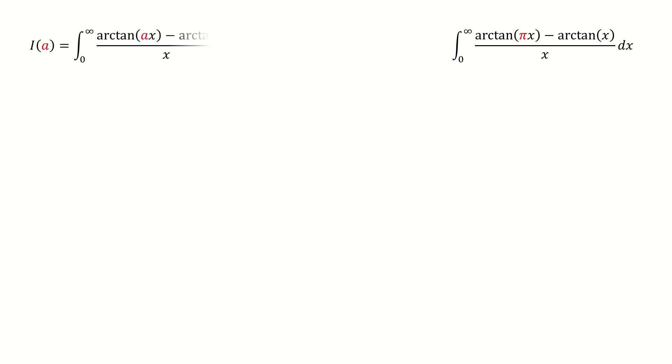So first, we define a function i here, and this function only depends on the parameter a. We can see if we set a equals to 1, then we got i(1) equals to 0, and for the original problem, it equals to the value when we set a equals to π.